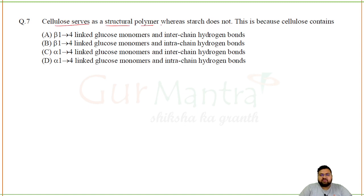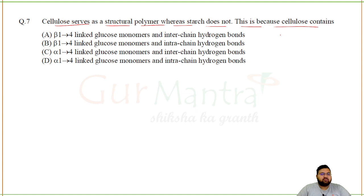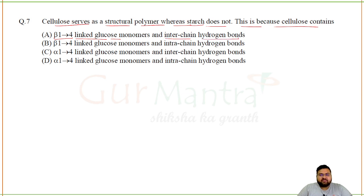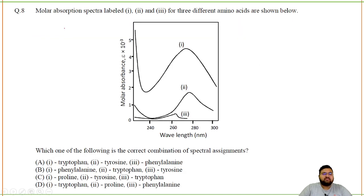Cellulose serves as a structural polymer whereas starch does not — this is because cellulose contains beta-1,4 linkages. Cellulose is only broken by specific cellulase enzymes, and it has inter-chain hydrogen bonds. These inter-chain hydrogen bonds are what allow cellulose to function as a structural polymer, which starch cannot do.